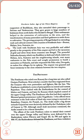The powerful Sailendra dynasty, which was Buddhist in faith and ruled over Malaya, Java, Sumatra and the neighboring islands, sent many embassies to the Pala court and sought permission to build a monastery at Nalanda. They also requested the Pala ruler Devapala to endow five villages for its upkeep. The request was granted — a testimony to the close relations between the two empires.